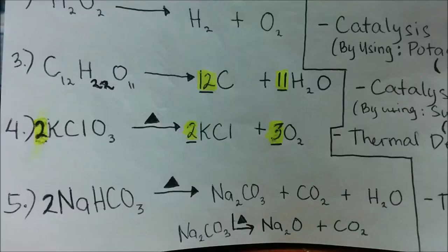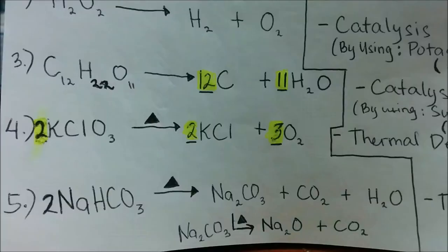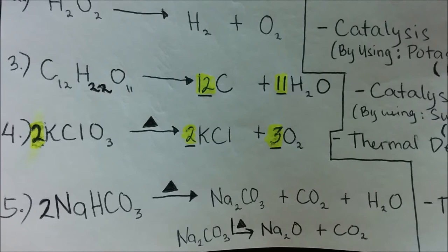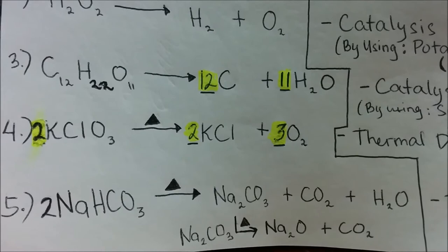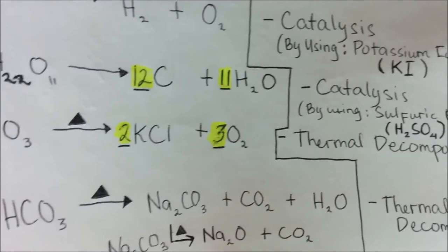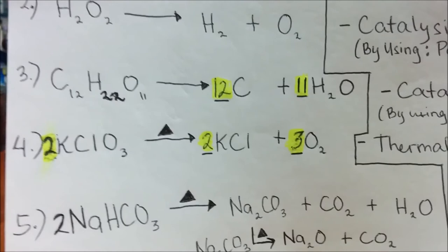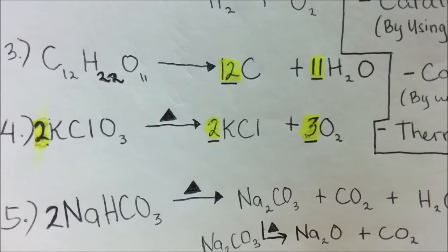My fourth example is potassium chlorate. In this reaction, we need to use heat to break it down into smaller and simpler compounds. This reaction involves thermal decomposition. Potassium chlorate is broken down into potassium chloride and oxygen gas. We need to balance the equation to follow the law of conservation of mass.